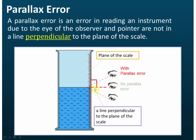But if you read it above this line, then your reading may be slightly higher than the actual reading. The difference of the reading is called the parallax error.